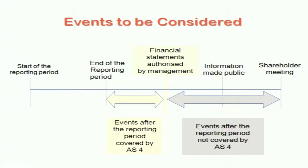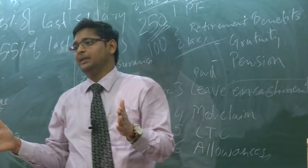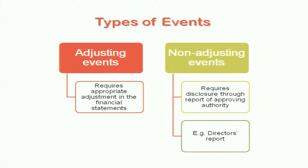Pictorially: the start of the reporting period is 1st April, end is 31st March. Then there is a date on which financial statements are signed, then information is made public in the annual report, then you have an AGM. AS4 only covers 31st March to the date of signing of the balance sheet. Adjusting events require appropriate adjustment in financial statements; non-adjusting events just require disclosures through the report of the approving authority - such as the director's report.